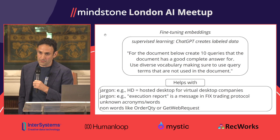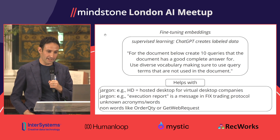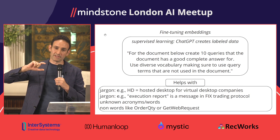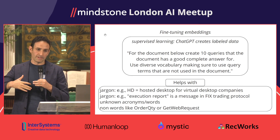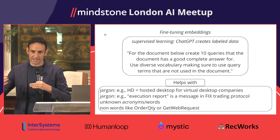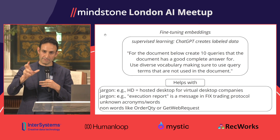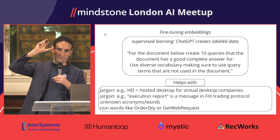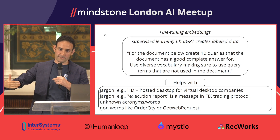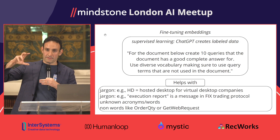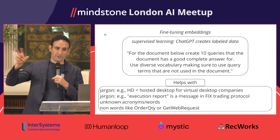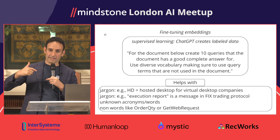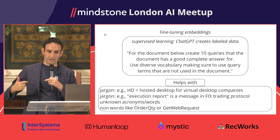It's pretty easy to fine-tune these models because they're much smaller, and this is where ChatGPT helps us — by creating a labeled dataset. To fine-tune an embedding model, we need queries and the relevant documents as training data. ChatGPT lets you do that with a prompt: you give it every document and ask it to generate 10 queries based on the document, and that becomes your training dataset for fine-tuning your embeddings model.